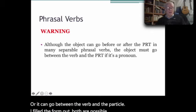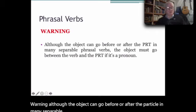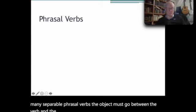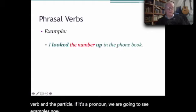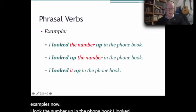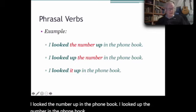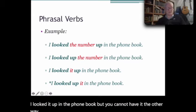Warning. Although the object can go before or after the particle in many separable phrasal verbs, the object must go between the verb and the particle if it's a pronoun. We are going to see examples now. 'I looked the number up in the phone book.' 'I looked up the number in the phone book.' 'I looked it up in the phone book.' But you cannot have it the other way around. I'm not going to pronounce this because it's incorrect.